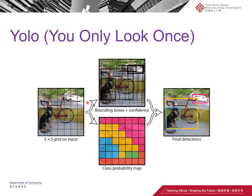Putting it all together: YOLO divides the image into regions, predicts class labels and bounding box coordinates for each region, then uses non-max suppression to filter candidate bounding boxes, finally outputting both class labels and corresponding bounding boxes. The whole image is put into the neural network at once — the dividing and separation happens inside the network.